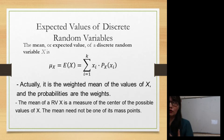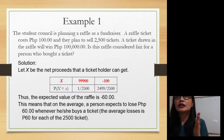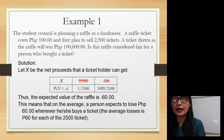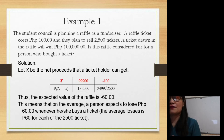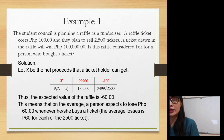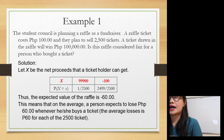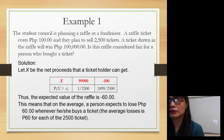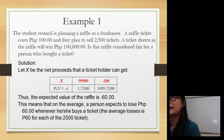What is the application of expected value? Let's examine example number one. The Student Council is planning a raffle as a fundraiser. A raffle ticket costs 100 pesos, and they plan to sell 2,500 tickets. A ticket drawn in a raffle will win 100,000 pesos. Is this raffle considered fair for a person who bought a ticket?